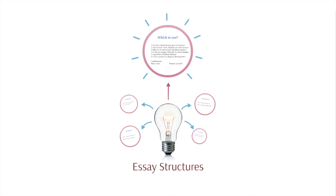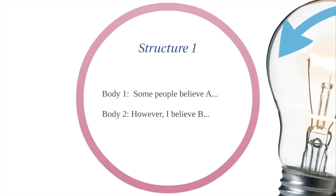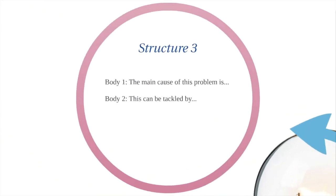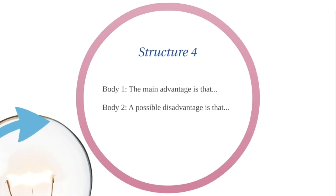There are a lot of different ways to structure your essay. For example, you can use the structure: Body 1 - Some people believe A. Body 2 - However, I believe B. You can use Body 1 - The main reason why I support A is. Body 2 - Another reason why I argue A is. Two of the same views supported in one essay. Another structure: Body 1 - The main cause of this problem is. Body 2 - This can be tackled by. See if you can guess what kind of question you would use this for. Another structure: Body 1 - The main advantage is that. Body 2 - A possible disadvantage is that. Again, you should be able to guess what the question may be.